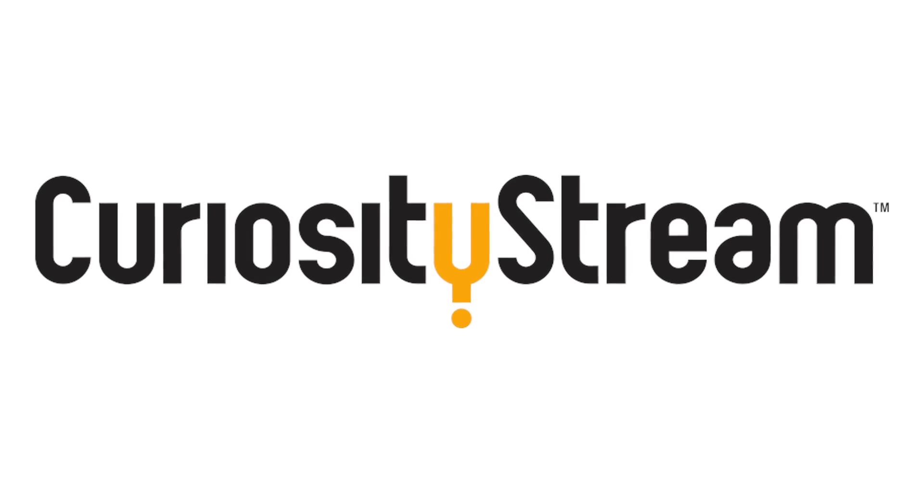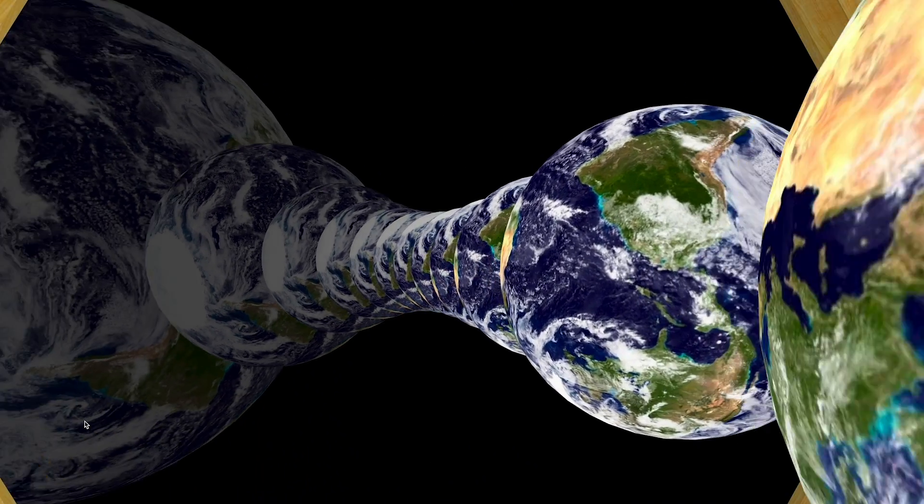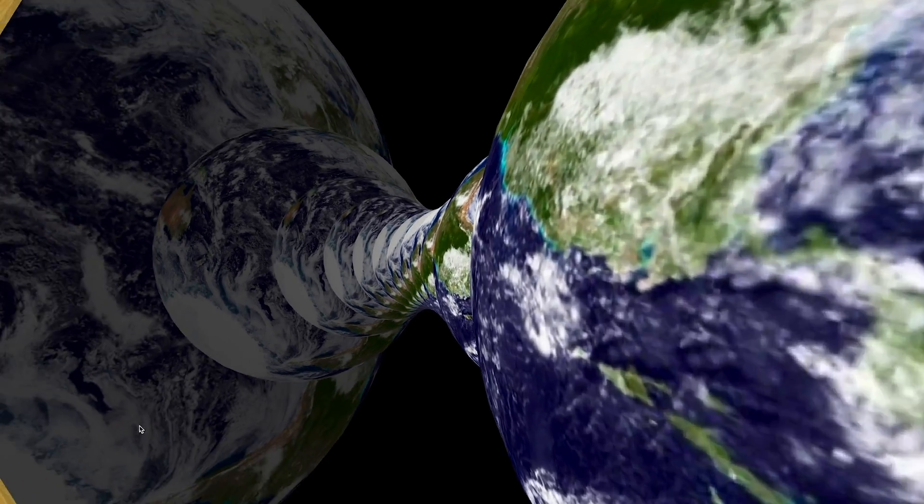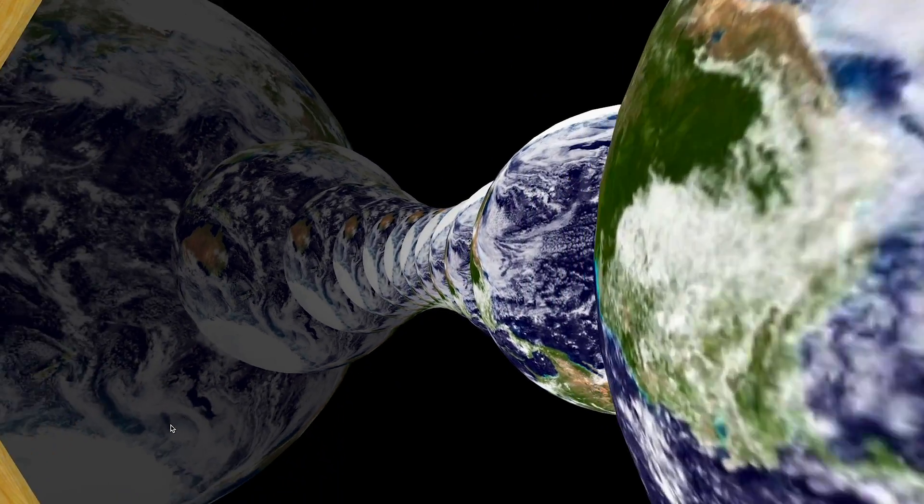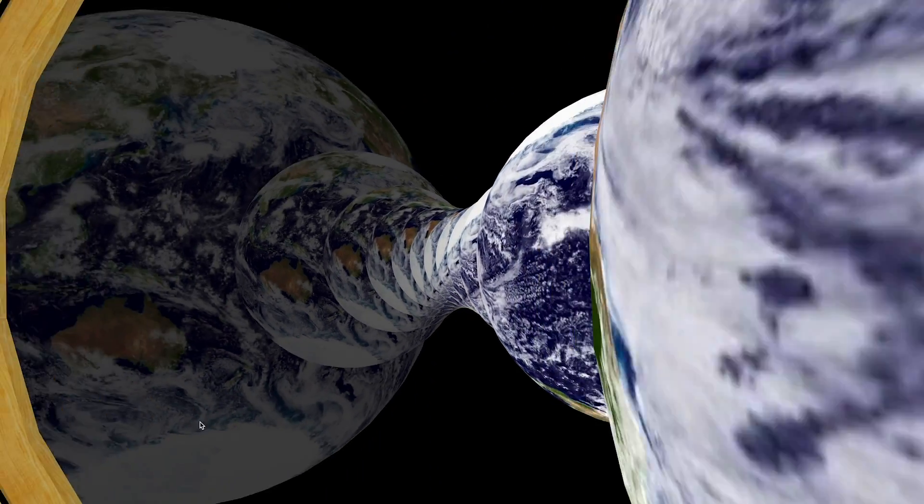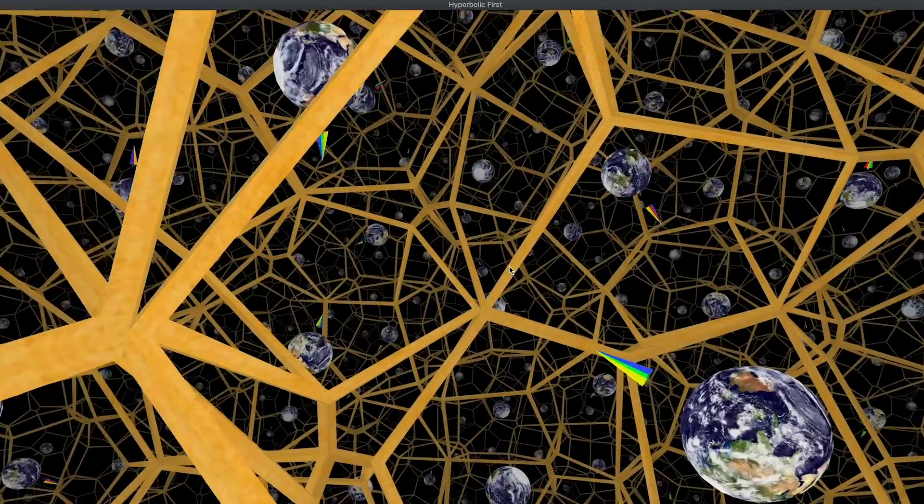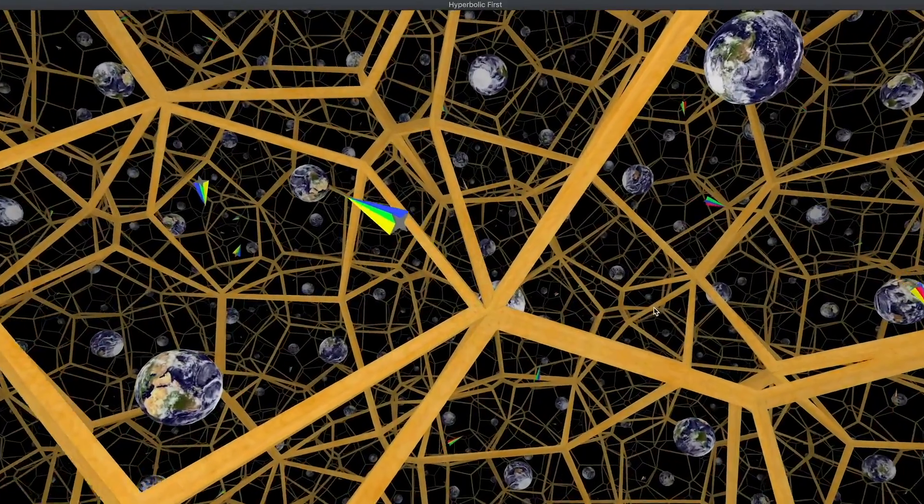On this channel, we've seen how weird physics can get when we move away from Euclidean space, how strange the universe would appear to us if we lived on a curved hypersphere or in hyperbolic space, for example, since beams of light would behave differently.